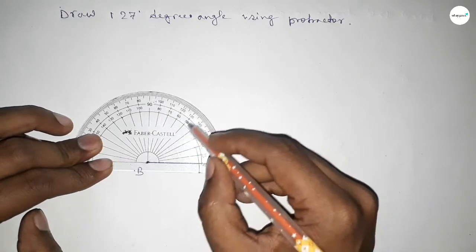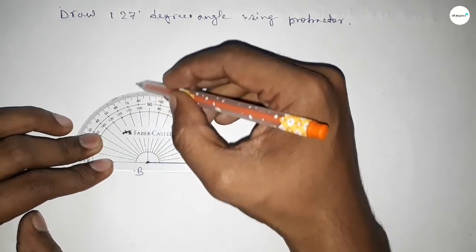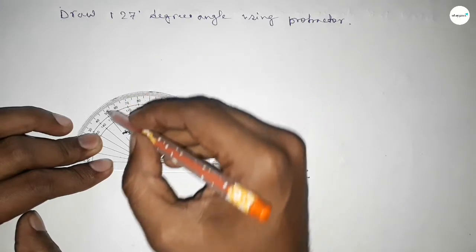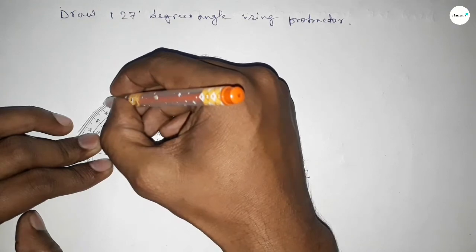30, 40, 50, 60, 70, 80, 90, 100, 110, 120, 25... and this is 26, 27. So this is 127 degrees.